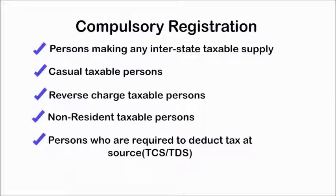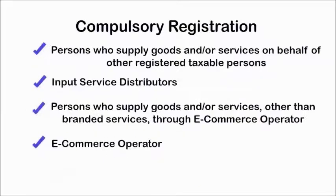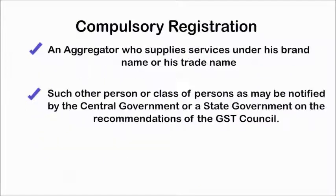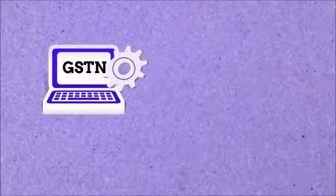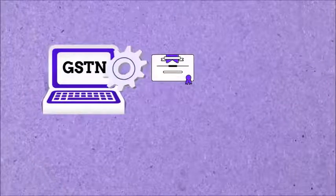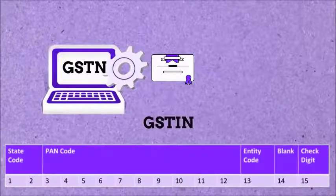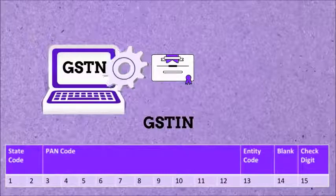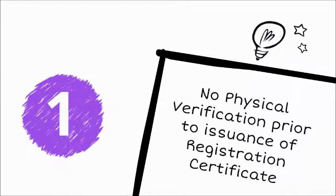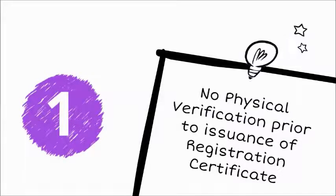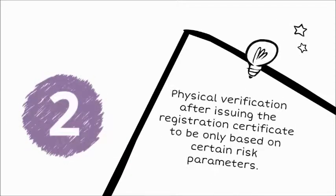Certain categories of taxpayers have to compulsorily register irrespective of threshold. If the registration is granted, the registration certificate will automatically be generated by GST and the taxpayer can download it. He need not visit any tax office. There will also be no physical verification of the premises by any tax authority prior to issuance of the registration certificate. Physical verification after issuing the certificate will be very limited and based only on certain risk parameters.